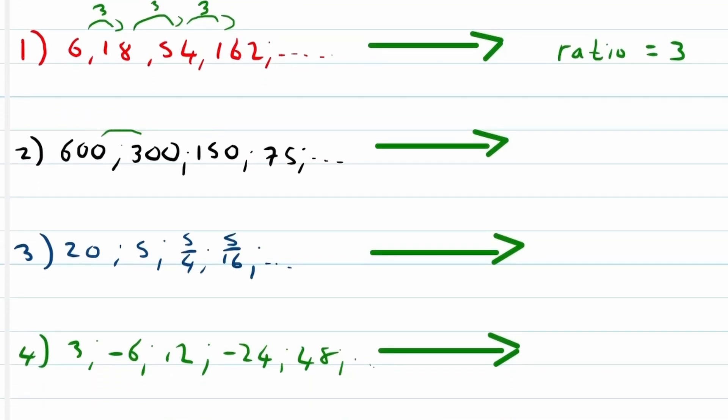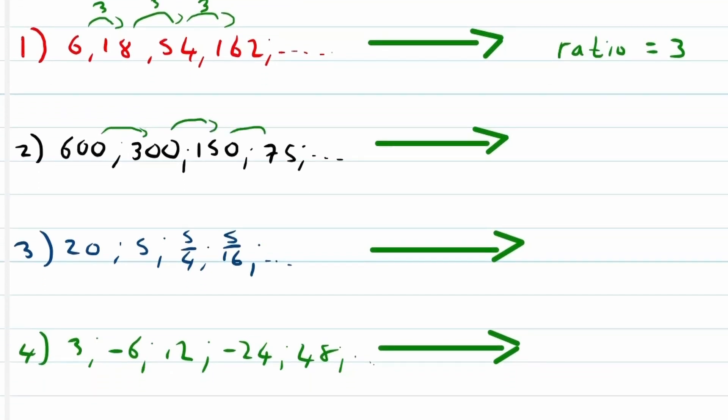Let's look at the second example. To go from 600 to 300 to 150 to 75, now over here we are dividing by 2, but remember we are writing the ratios down as multiplication. So to divide by 2 is the same as multiplying with a half.